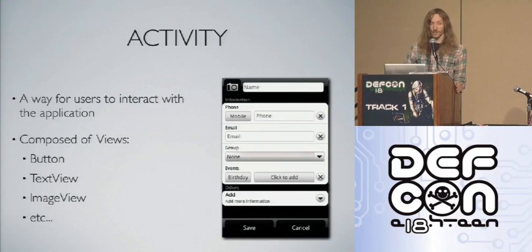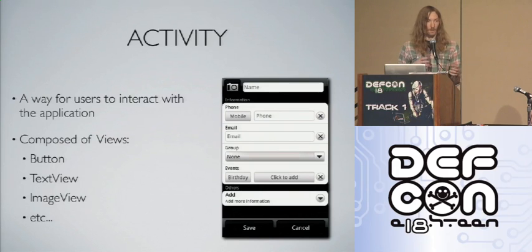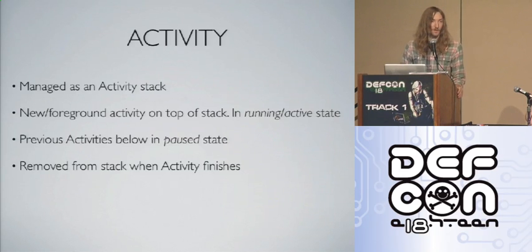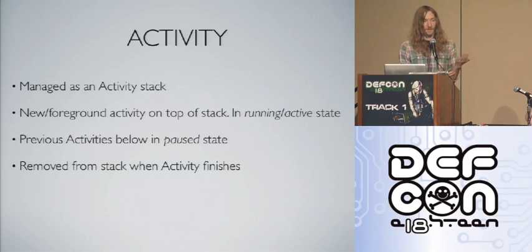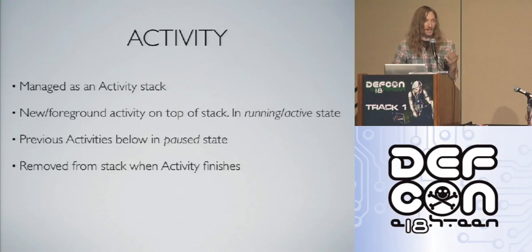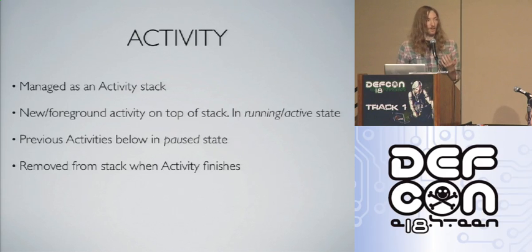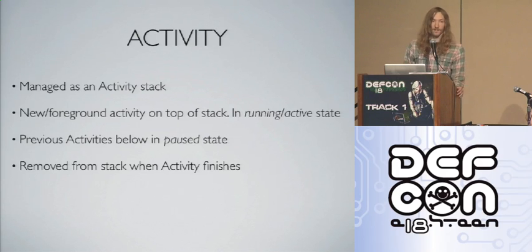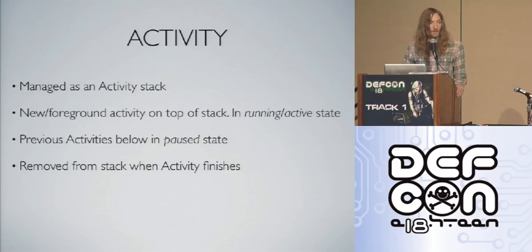Activities are basically just UI screens for Android — a way for the user to interact with the application. They're composed of UI widgets called views: button views, text views, and so on. Activities are managed in an activity stack, where any new activity created is at the top of the stack. The foreground activity is in an active state; activities below it are paused. They remain in the stack until they finish, or the system can remove them if memory runs low.